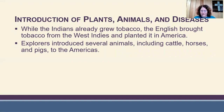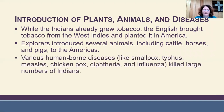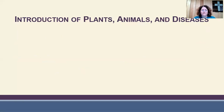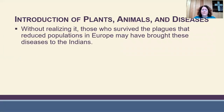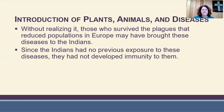Various human-borne diseases like smallpox, typhus, measles, chickenpox, diphtheria, and influenza killed large numbers of Indians. The Indians had never experienced diseases like these before and had no immunity built up to them. Those who survived the plagues in Europe may have unknowingly brought these diseases to the Indians. Since the Indians had no previous exposure, they had not developed immunity to them.